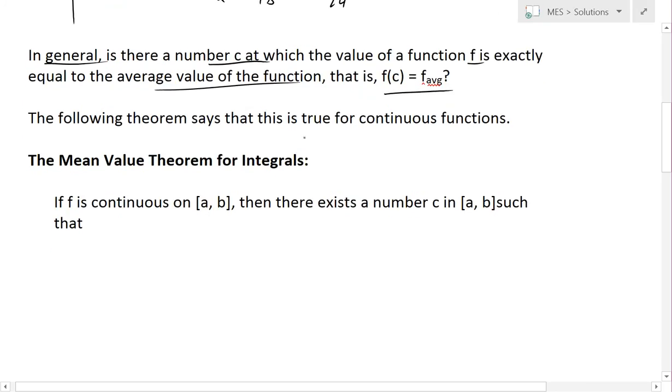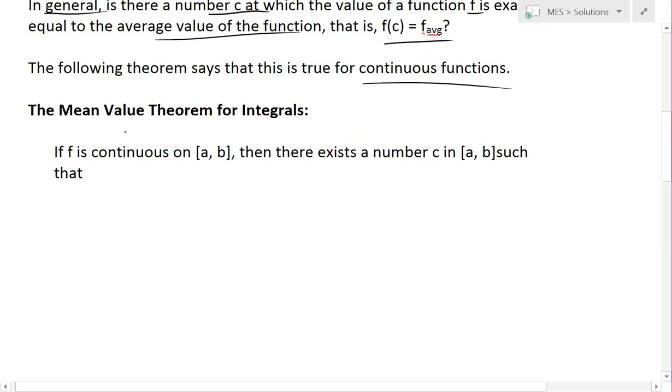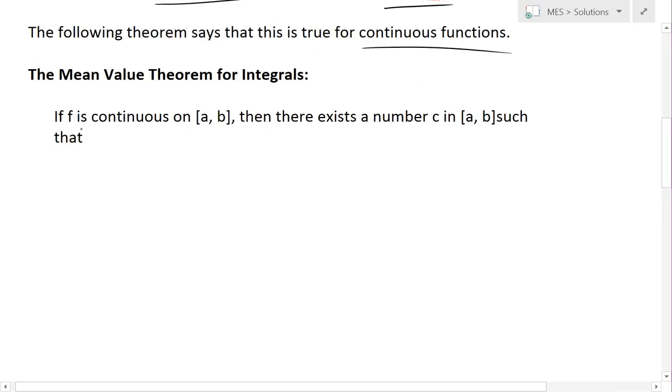Well, the following theorem says that this is true for continuous functions and this is known as the Mean Value Theorem for Integrals. Basically, if f is continuous on the closed interval [a, b], then there exists a number c inside (a, b) such that f(c) is equal to f_average.